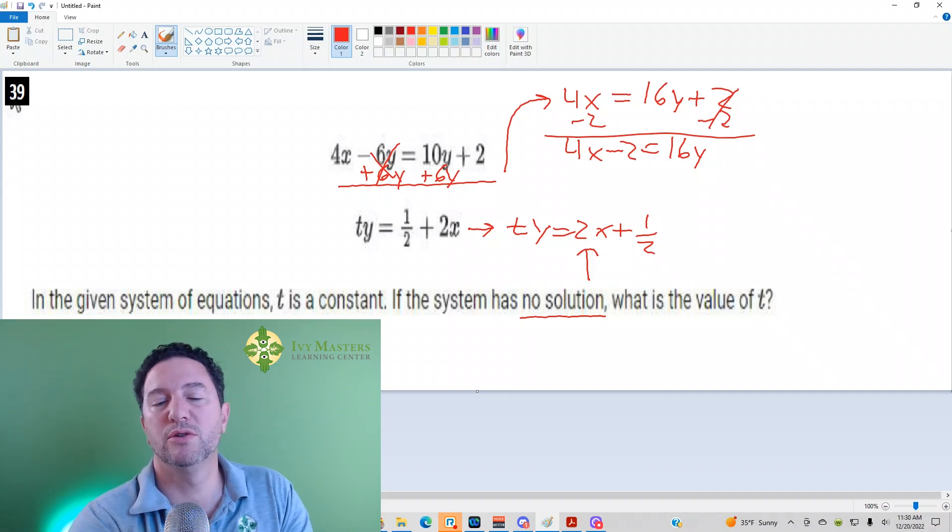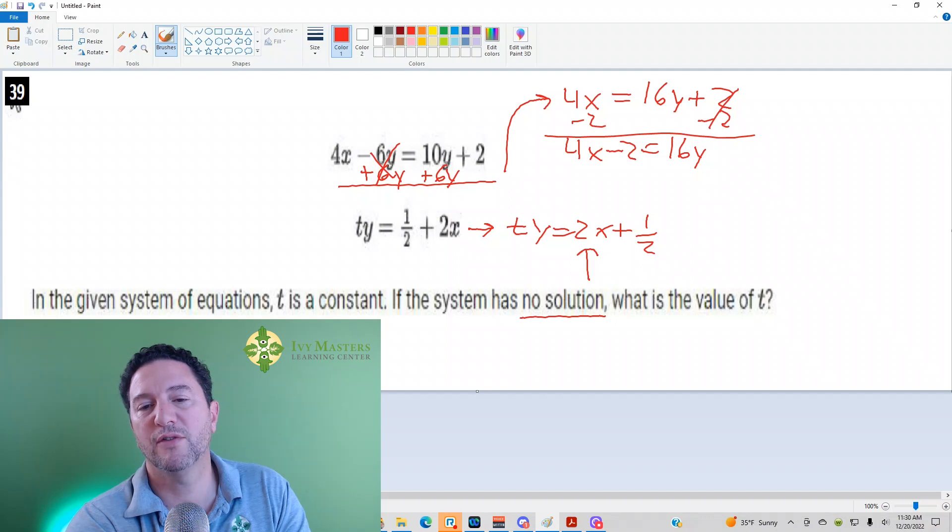Now, a lot of times students will divide the left side by 2 and just cancel out the 4 and the 2. When you divide the entire left side by 2, the common factor between both of those monomials on the left side of the equal sign has to be 2.